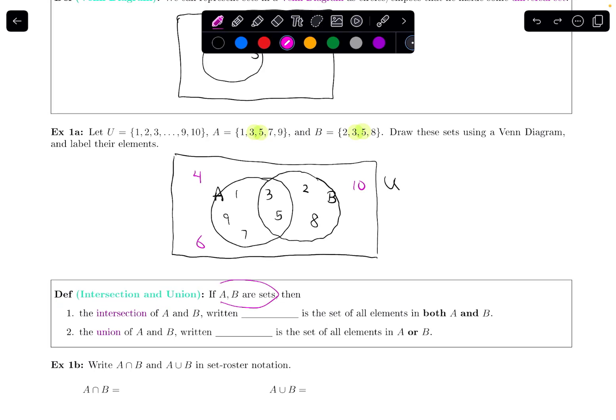So if A and B are sets, the intersection of A and B, and the way I denote this is we write A, I put this kind of upside down U shape, and then B. The intersection, the way I denote it is like this, is the set of all elements that are in both A and B. So it's got to be in both of them to be in the intersection.